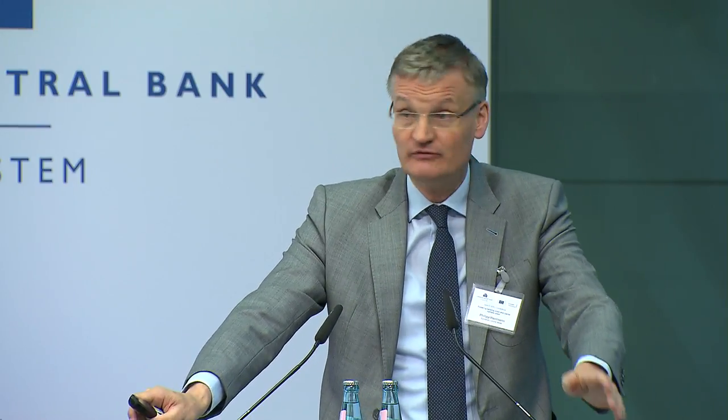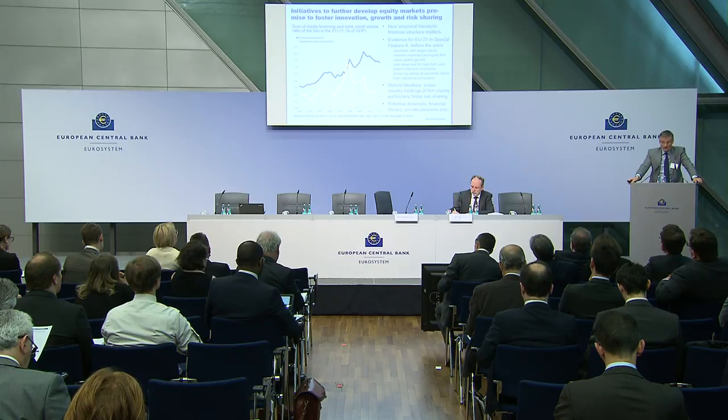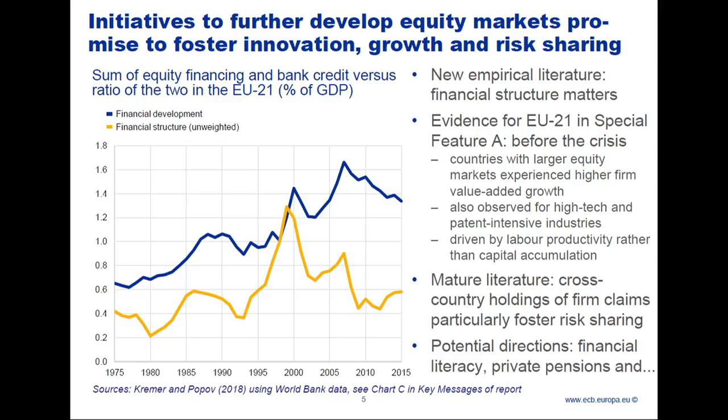The first policy issue is based on Special Feature A, which makes the point that Europe has an interest in further developing equity markets relative to other capital markets. There are elements already in the Capital Markets Union agenda, like a venture capital initiative and transparency initiatives for small and medium-sized firms. A new literature suggests that financial structure — defined as the degree of equity financing relative to bank lending — may matter more than we thought. Countries with a larger share of equity market financing to bank lending tend to grow faster.